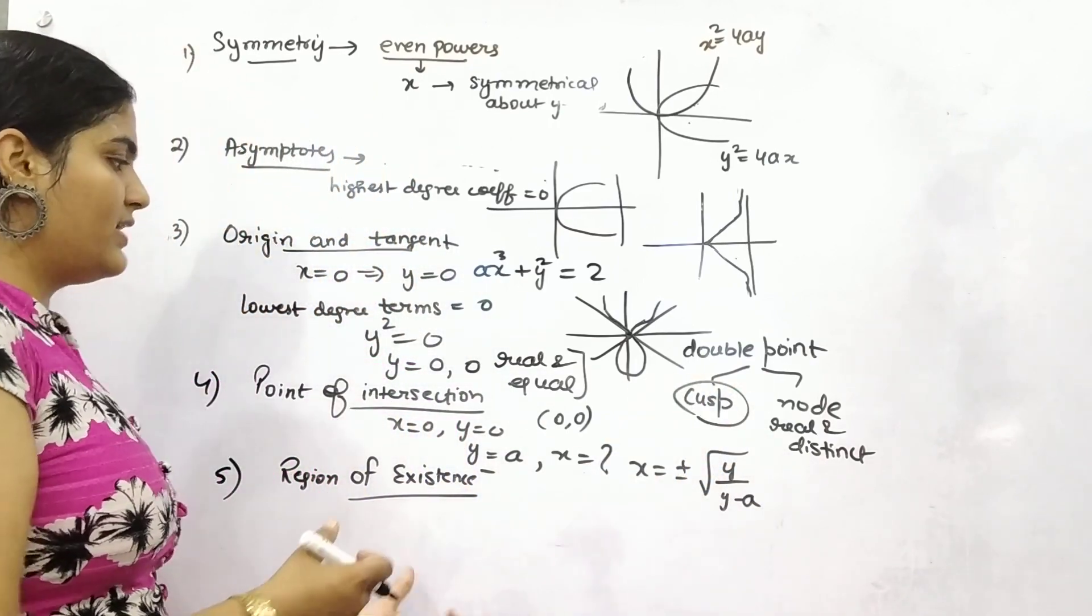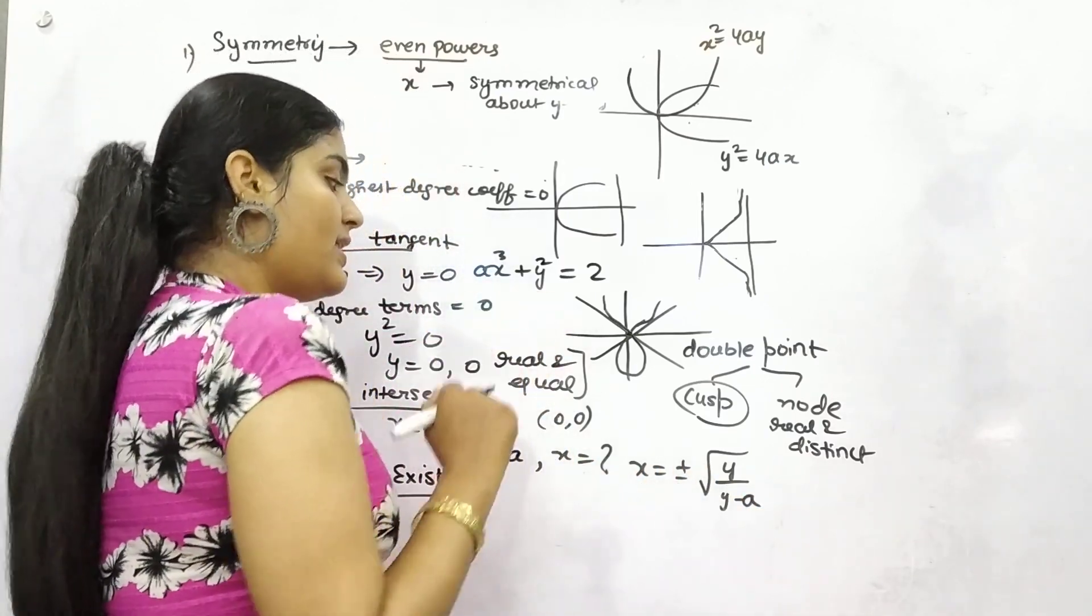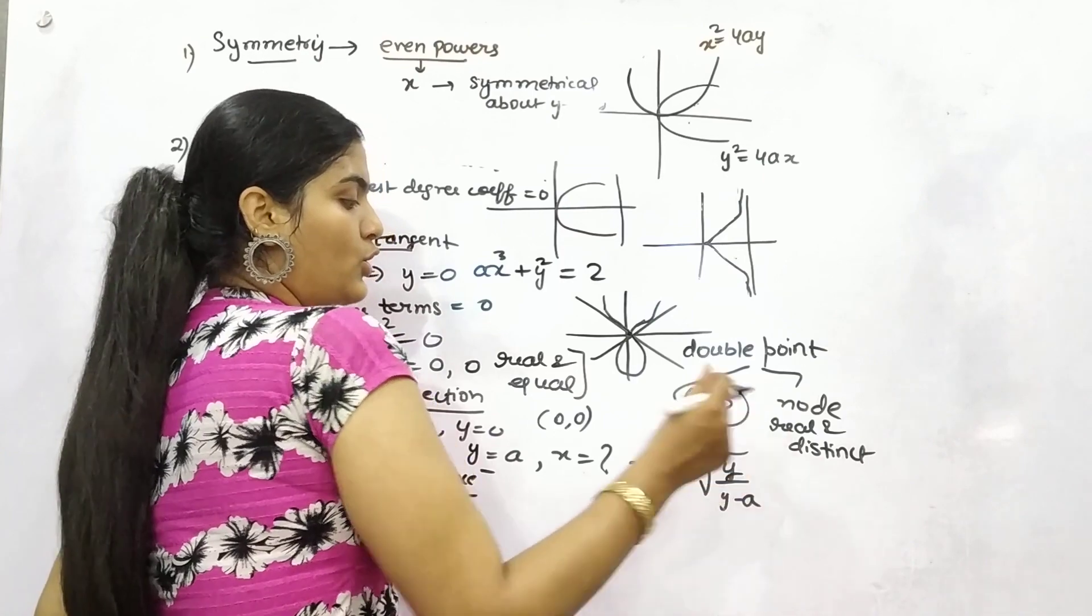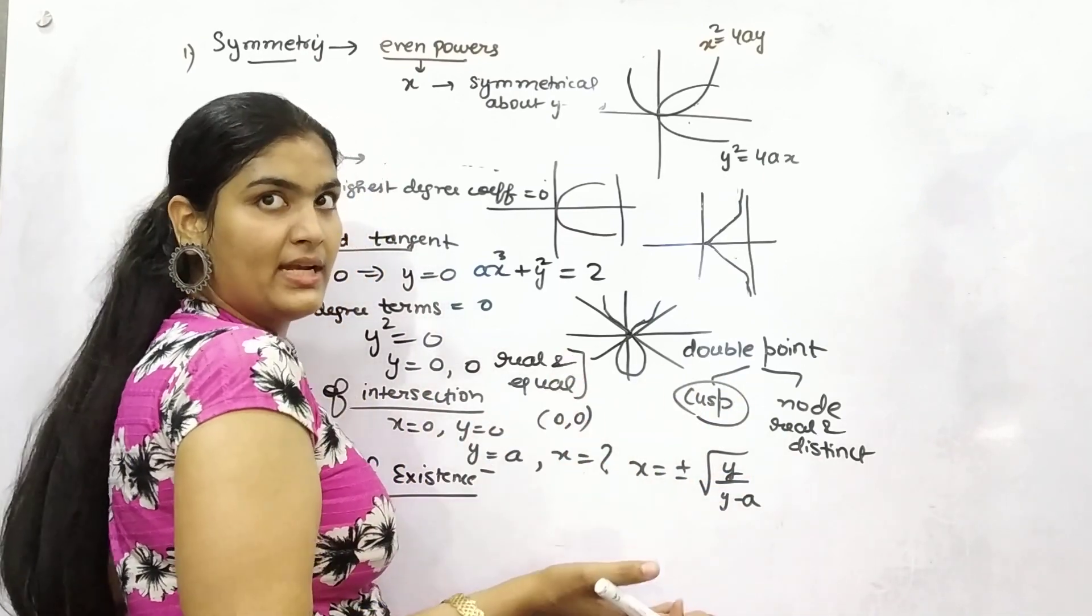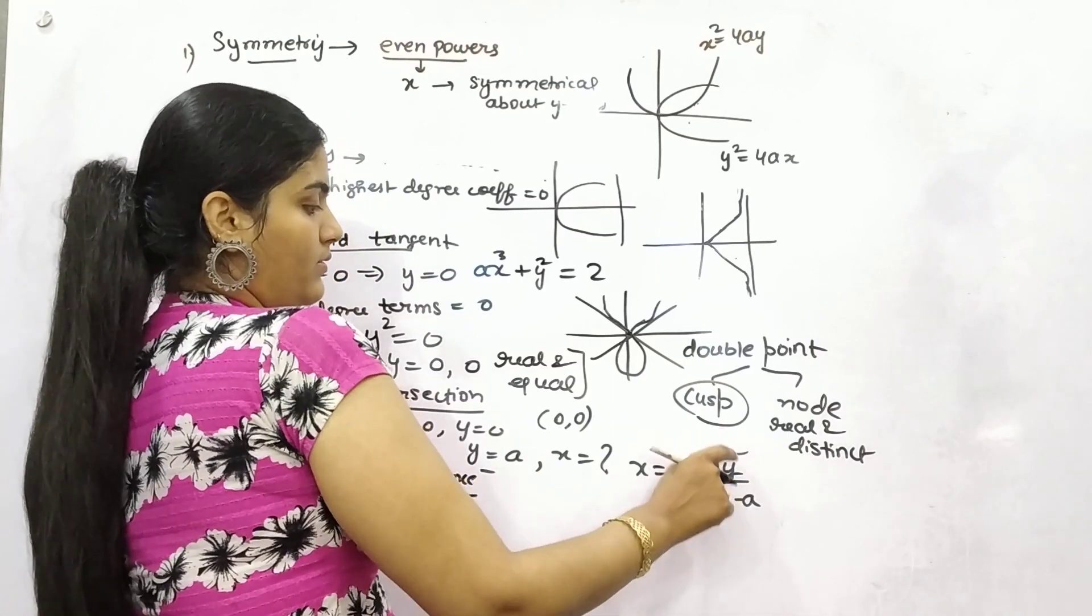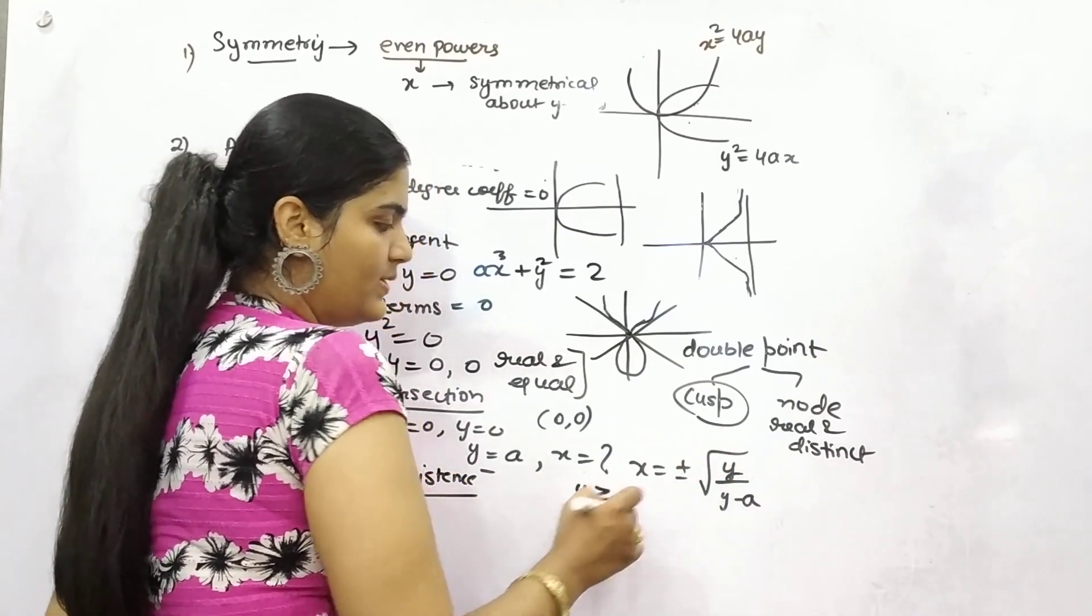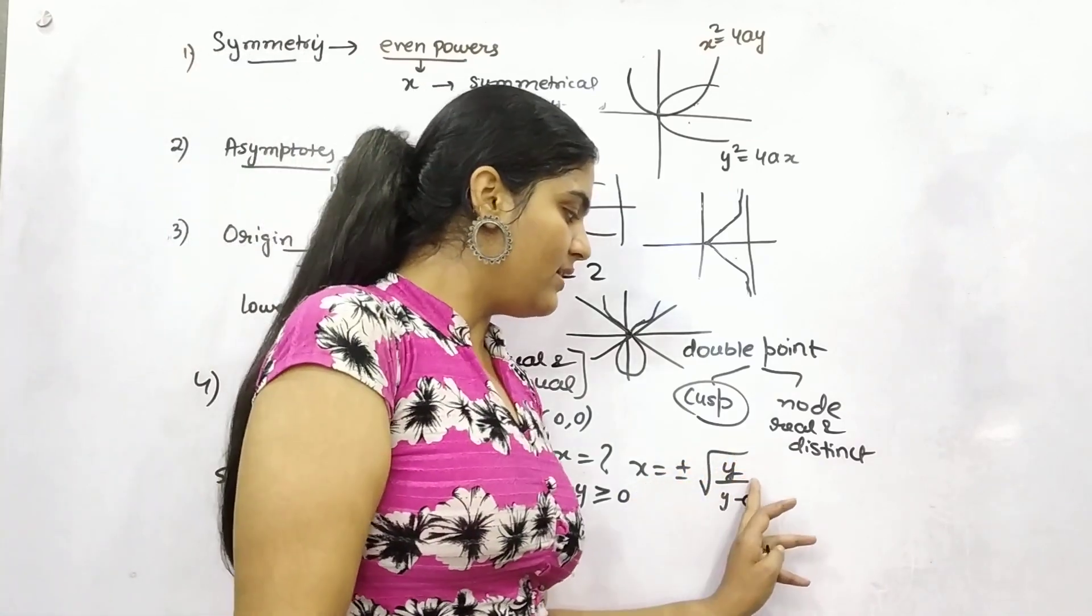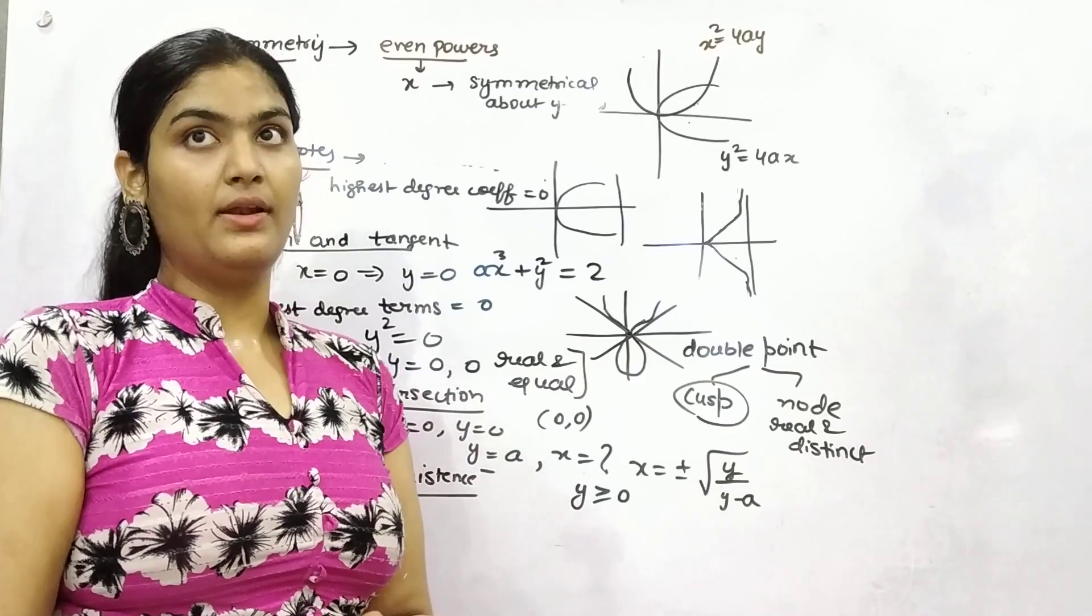This is your point of intersection or the form of equation you are given. To have real value of x in plus and minus form, this y should be greater than or equal to 0. Because if it would be negative, then you will get negative root and that would be imaginary, not real.